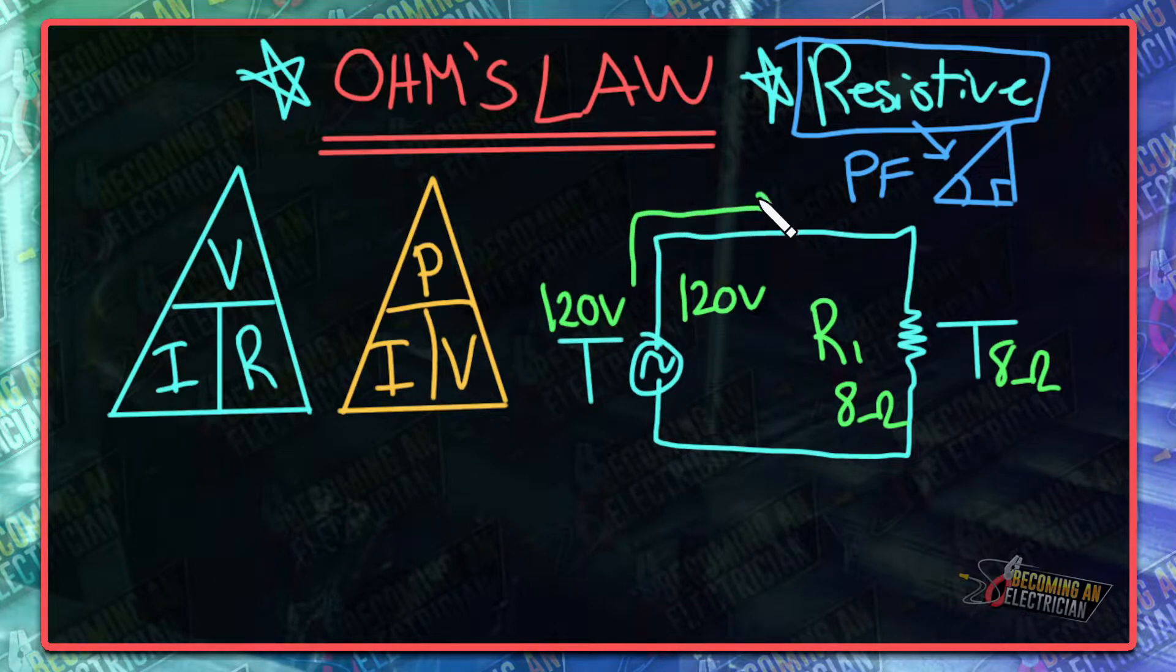We know this is a basic circuit, so 120 volts is also going to be dropped across this load. Now we want to find current right here. In order to do that, if you want to find current, you just go voltage divided by resistance and it gives you your current. That's how easy these math triangles are.